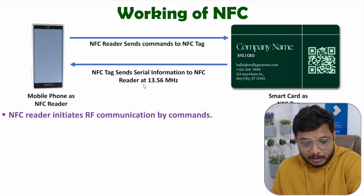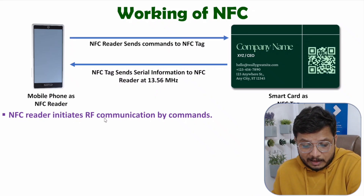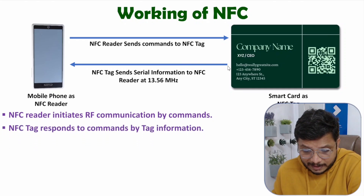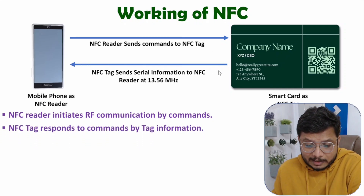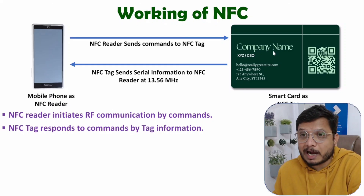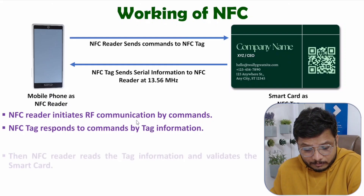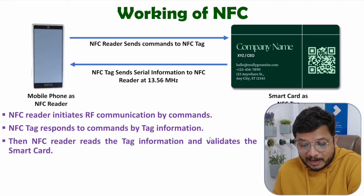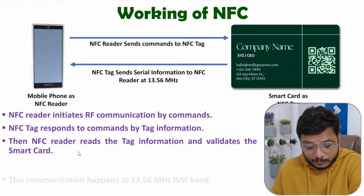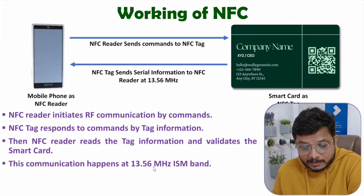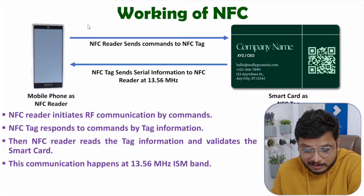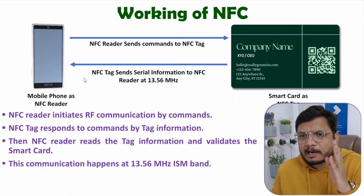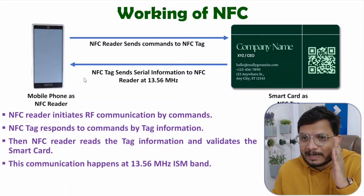The NFC reader initiates RF communication by sending commands, and based on the command the NFC tag responds back with the tag information — the card information. Based on that information, the NFC reader reads and validates the smart card. This communication happens at the 13.56 MHz ISM band at very less distance — it happens at the near field of antennas, which is inductive coupling. Near field always involves inductive coupling.